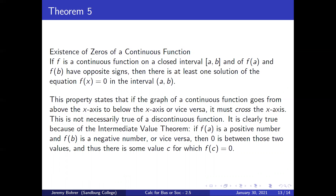Theorem 5: Existence of Zeros of a Continuous Function. If f is a continuous function on the closed interval [a, b], and f(a) and f(b) have opposite signs, then there is at least one solution of the equation f(x) = 0 in the interval (a, b). This states that if the graph of a continuous function goes from above the x-axis to below the x-axis (or vice versa), it must cross the x-axis. This is not necessarily true of a discontinuous function. It follows clearly from the Intermediate Value Theorem: if f(a) is positive and f(b) is negative (or vice versa), then zero is between those two values and thus there is some c for which f(c) = 0.